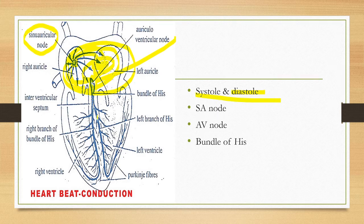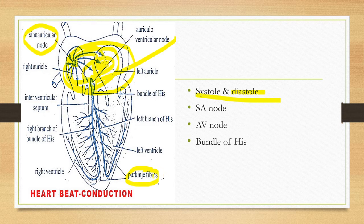The impulse is transmitted through the bundle of His, which has right and left branches. The fine branches are called the Purkinje fibers. This is the conducting system: SA node, AV node, bundle of His, and Purkinje fibers. The impulse spreads all over the right and left ventricles, causing ventricular contraction.